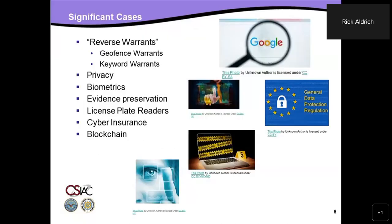Now I'd like to get into some actual cases — first some reverse warrant cases. A reverse warrant turns the table: normally in a warrant you believe you know who the criminal is or where the evidence is, and you describe with particularity where it's likely to be found. In a reverse warrant, you're basically saying you don't know where the evidence is or who did it, but if you get a bunch of collected data you might be able to narrow down the scope of who might have done it. These are somewhat controversial, but recent cases should be helpful.